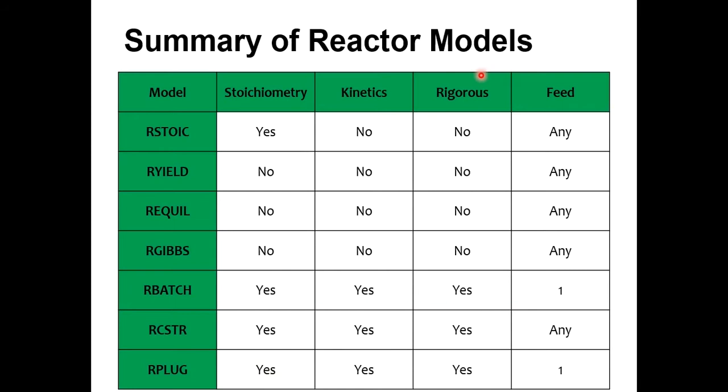So a summary of reactor models. These reactor models are basically compared on four parameters: stoichiometry, kinetics, rigorous information, and feed information.